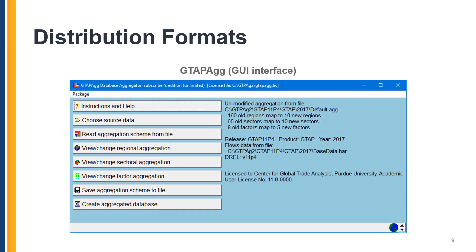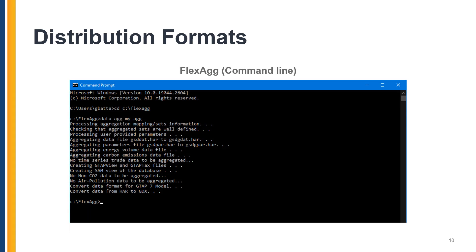The first, GTAP-AG, is a graphical user interface for use with Windows that is designed to load and handle multiple GTAP databases. With an increasing number of database versions, each with their own reference years and satellite extensions, GTAP-AG is an incredibly useful tool for users. The second type of distribution is called Flex-AG, a command-line data aggregation program used for creating aggregated databases from the fully disaggregated GTAP database. Flex-AG uses a batch file to run a series of GEMPACK executable files and is largely used by those wanting to modify the GTAP database to aggregate their modified data.